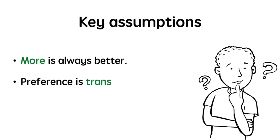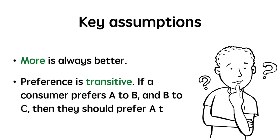We also consider preferences to be transitive. This means if you prefer product A to product B and prefer product B to product C, then you prefer product A to product C.